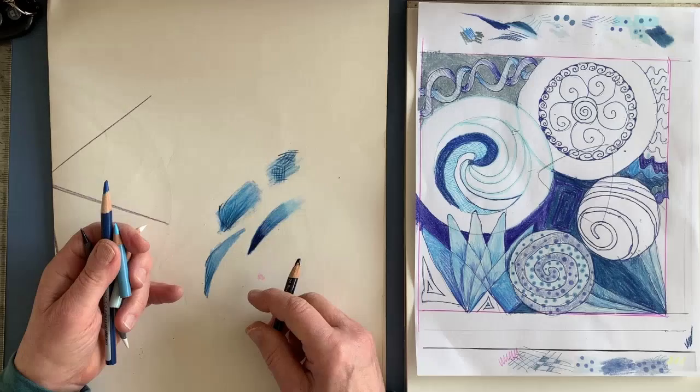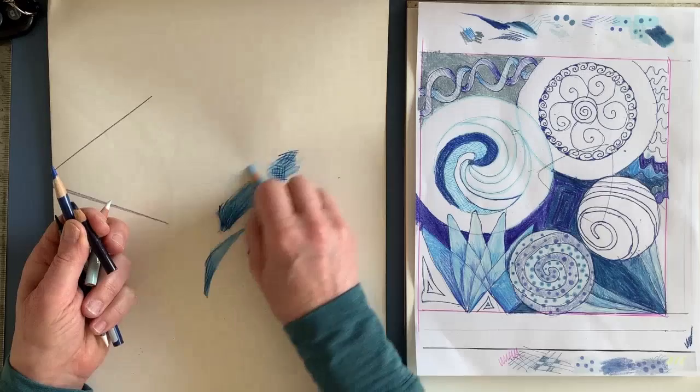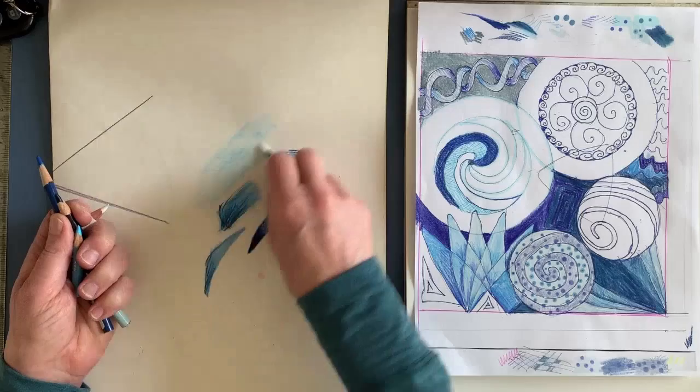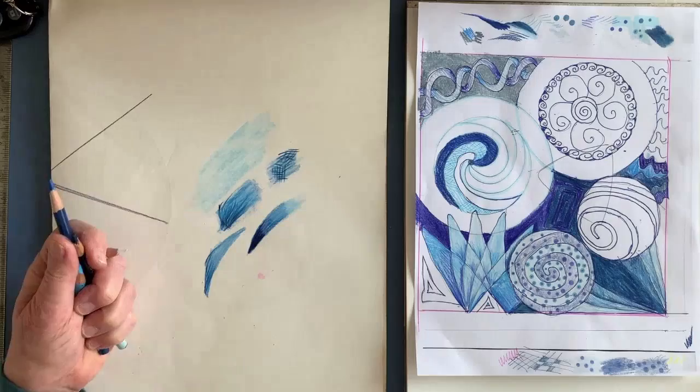So in addition to colored pencil, I see places where there is a colored pencil background. And then there are markers on top.